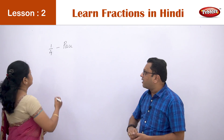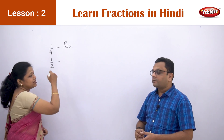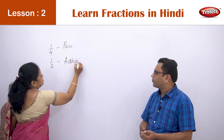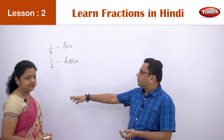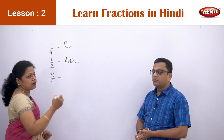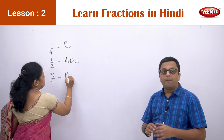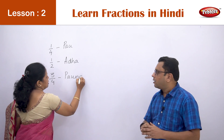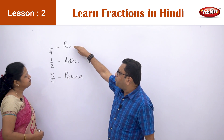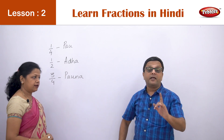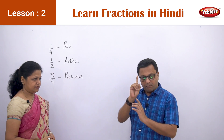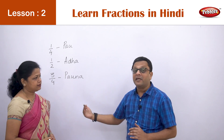Then one-half is said as 'Aadha.' And three-fourths is called 'Pauna.' So we call them 'Pau', 'Aadha', and 'Pauna' when they are below one — meaning below the number one, when one is not yet completed.